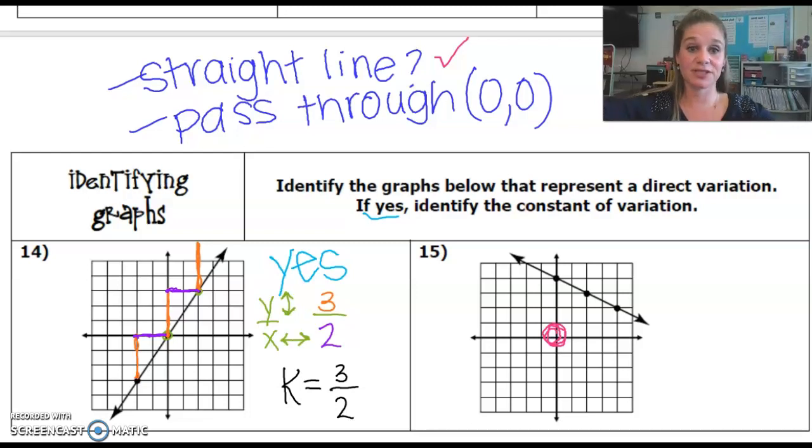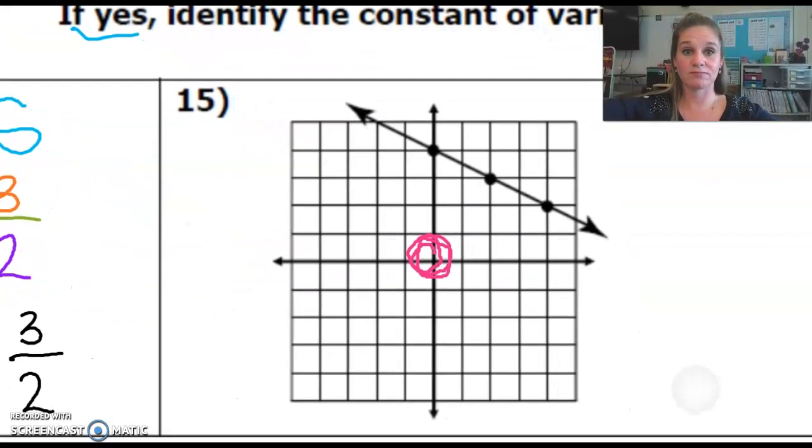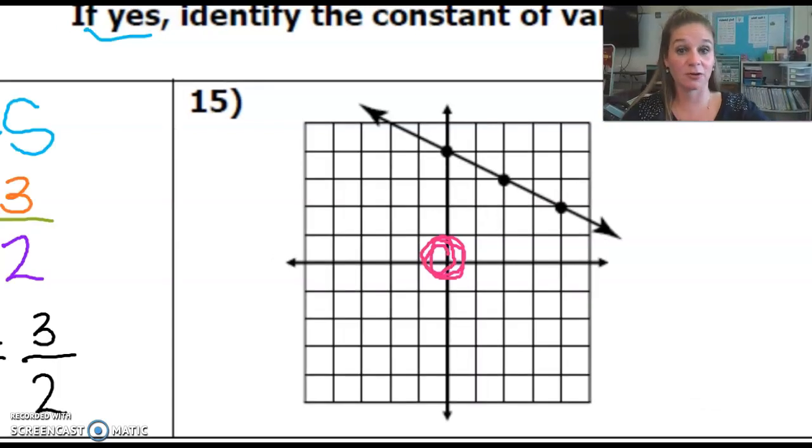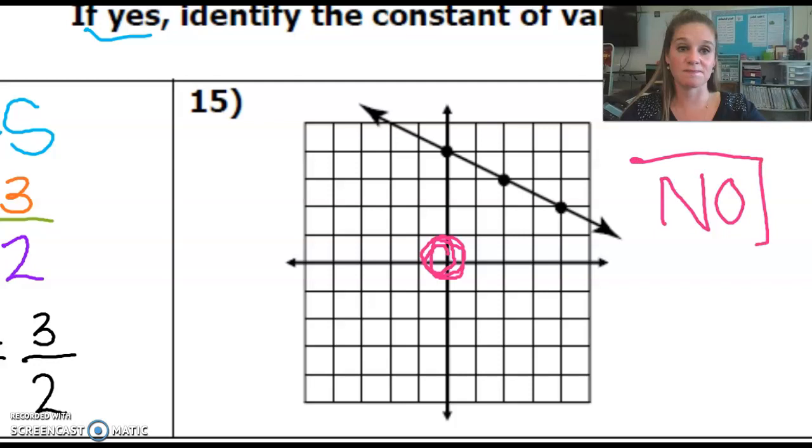Does that line pass through zero zero? If you're looking, it doesn't. It crosses way up here and it never comes down through that point. So this one's simply going to be a no. It doesn't represent direct variation because it doesn't pass through zero zero.